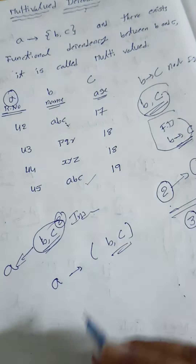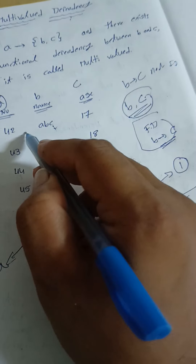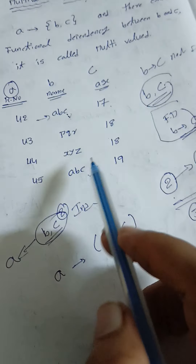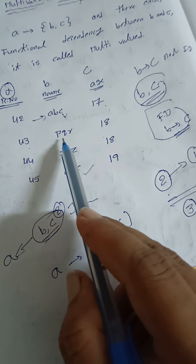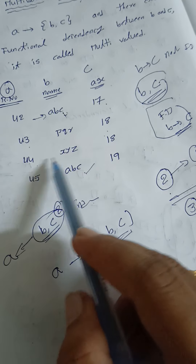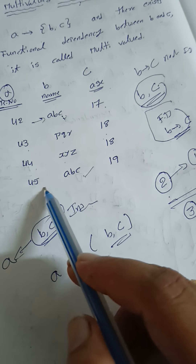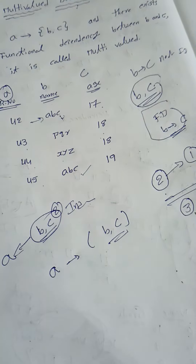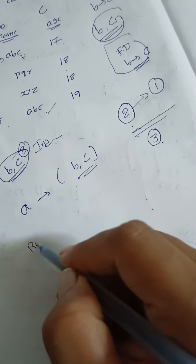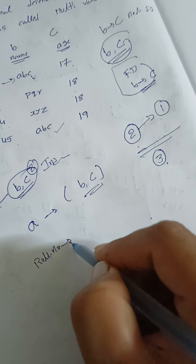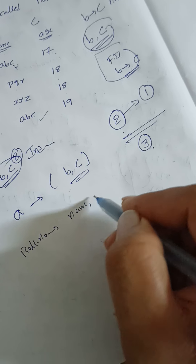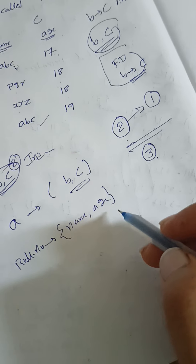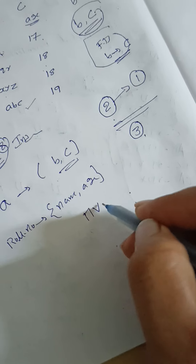What is roll number 42? Roll number 42 implies name A, B, C and age 17 — this is unique information. Similarly, roll number 43 implies P, Q, R and age 18; roll number 44 implies X, Y, Z and age 18; roll number 45 implies A, B, C and age 19. So here, roll number implies name and age — this is a multivalued dependency.